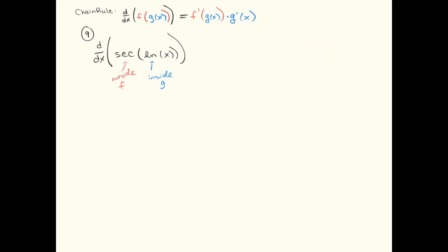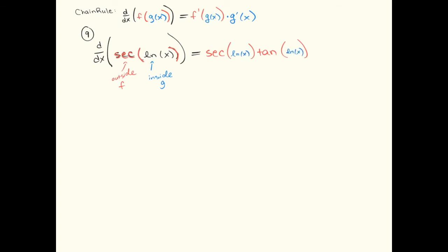Here we've got the outside function being secant and the inside function being ln. We're going to skip the u notation — the u is the ln of x. The first step of the chain rule is to take the outside function and take its derivative. The derivative of secant of u with respect to u is secant u tangent u. The chain rule says I should take my f prime, which is secant tangent, and leave the u, or the inside function, plugged into it. The ln is plugged in in both slots. Then I multiply times the derivative of the inside function, which is 1 over x. That's my final answer.